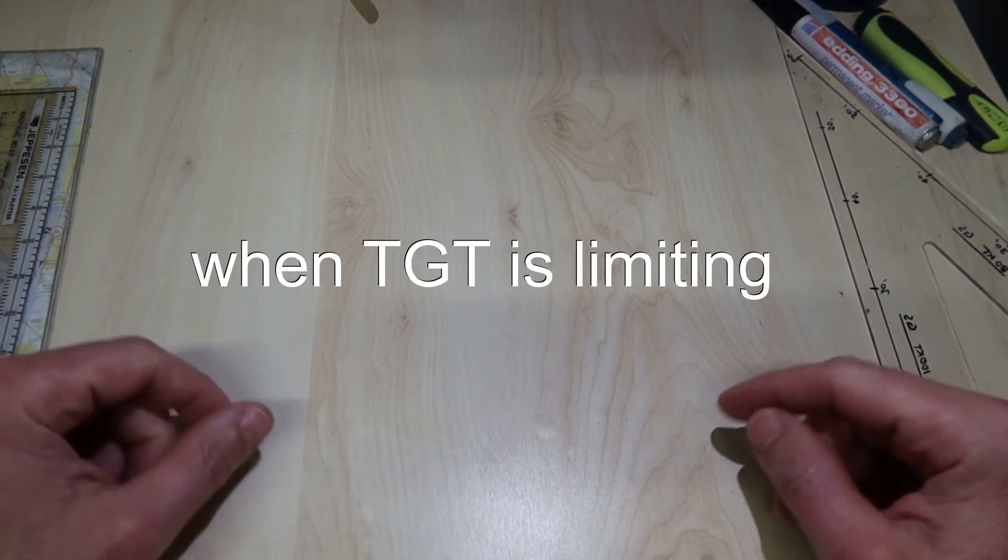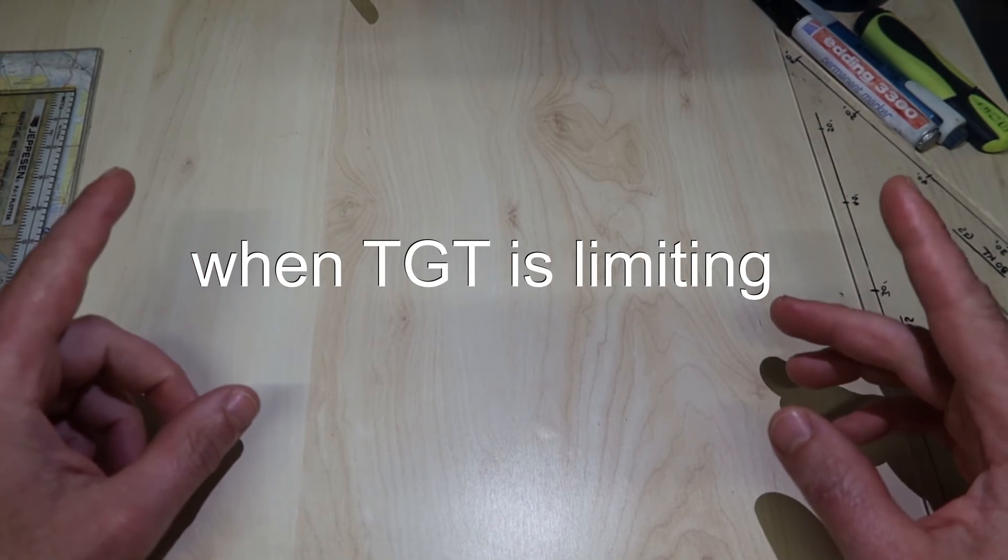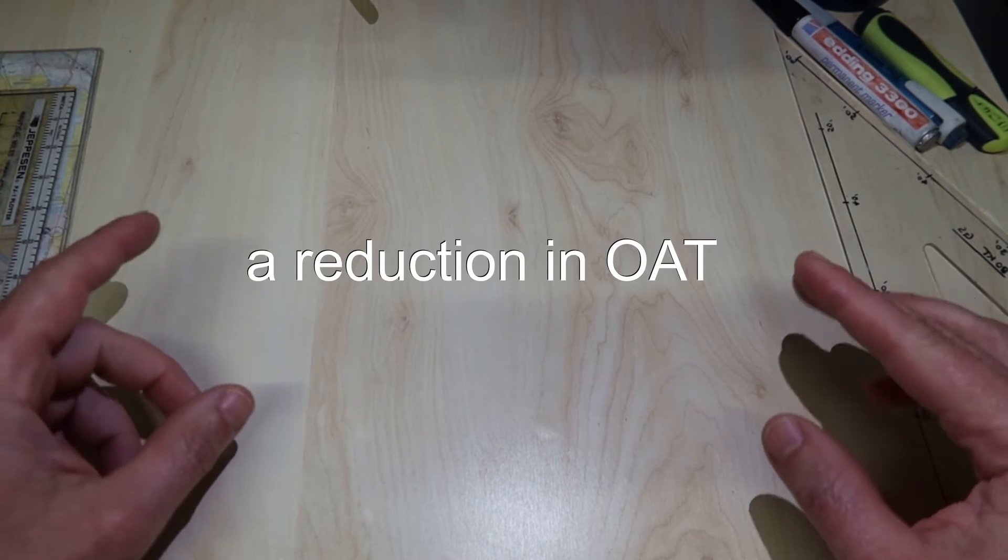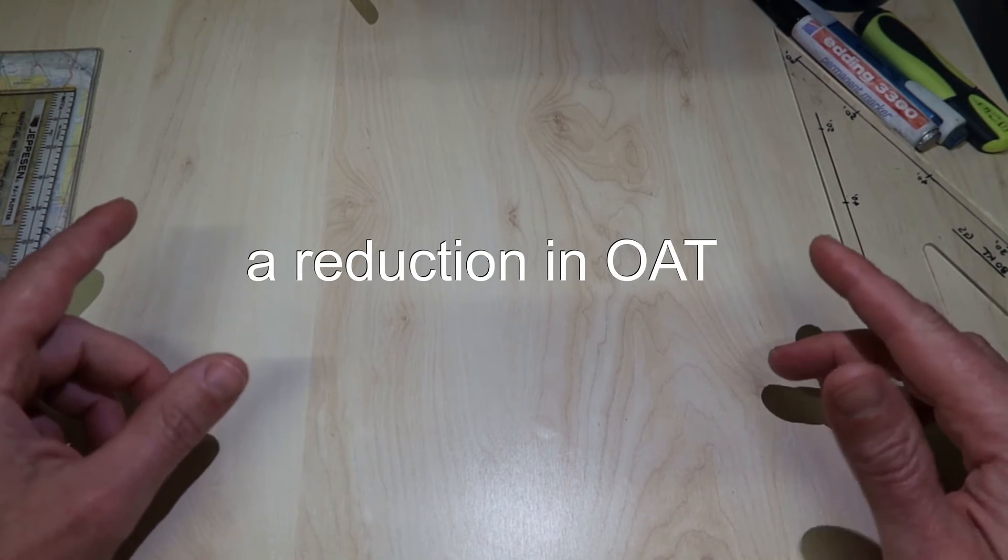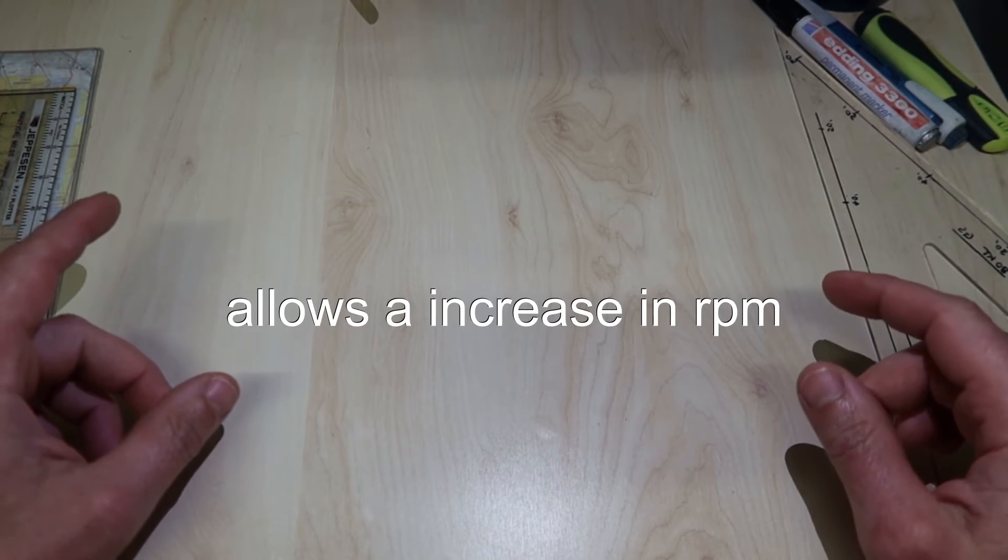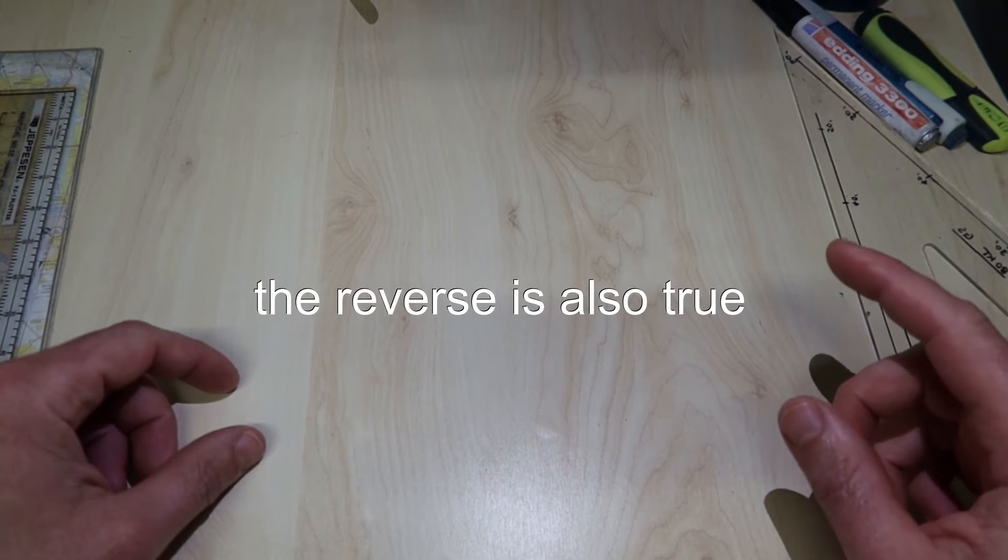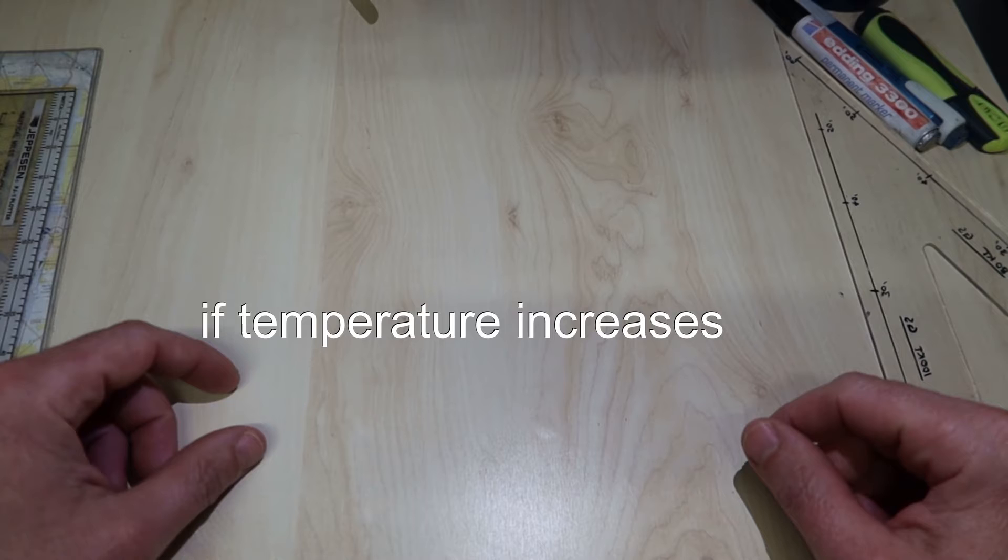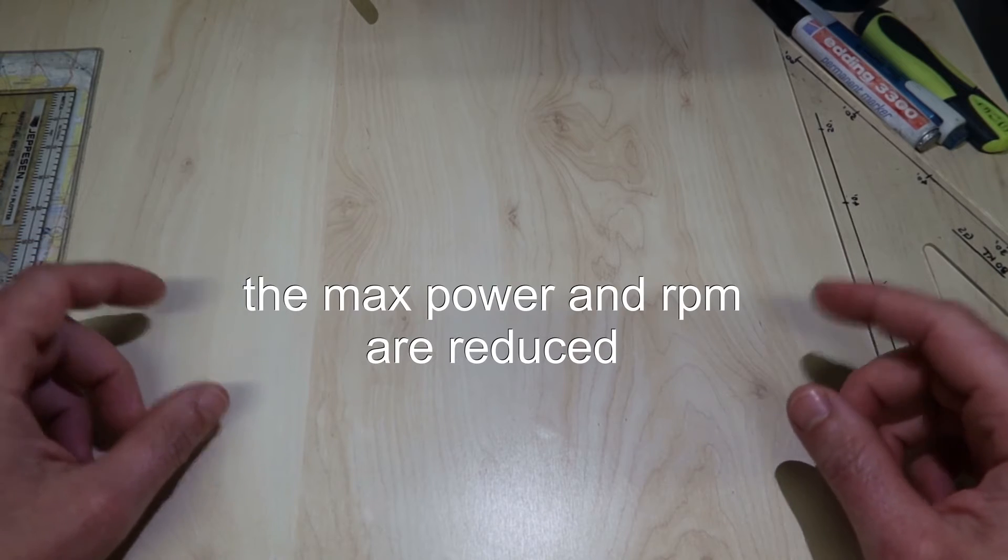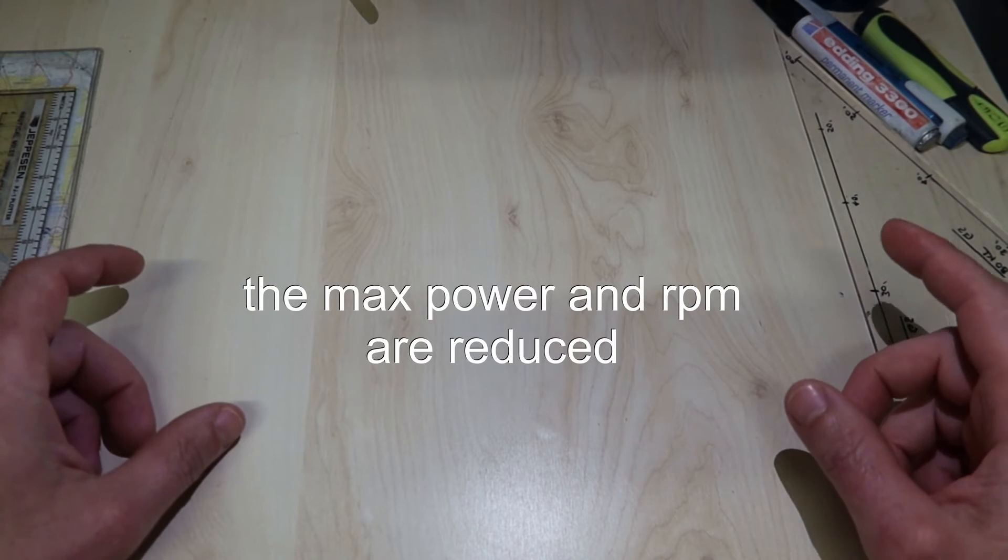This means that when the total gas temperature is limiting, a reduction in outside air temperature allows an increase in RPM and a subsequent increase in output power. The reverse is also true. If temperature increases, the maximum power and RPM are reduced.